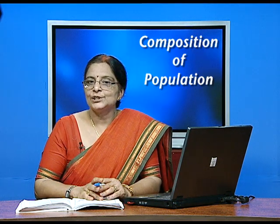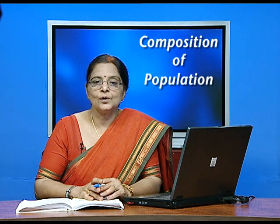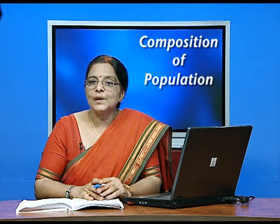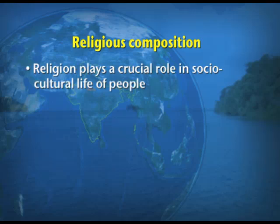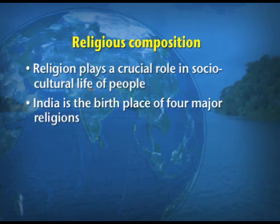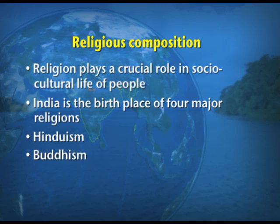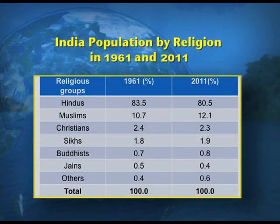The third composition of population is the religious composition. Religion is a very important socio-cultural attribute of the population of India and plays a crucial role in the socio-cultural life of the people. India is the birthplace of four major religions: Hinduism, Buddhism, Jainism, and Sikhism. A comparative table shows the percentage of population under various religious groups for 1961 and 2011.